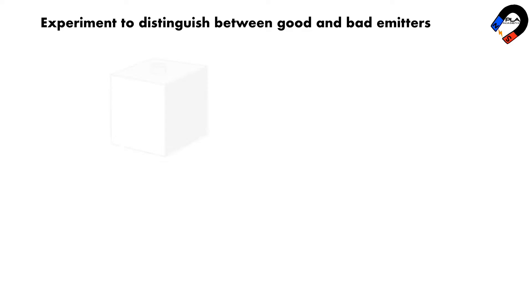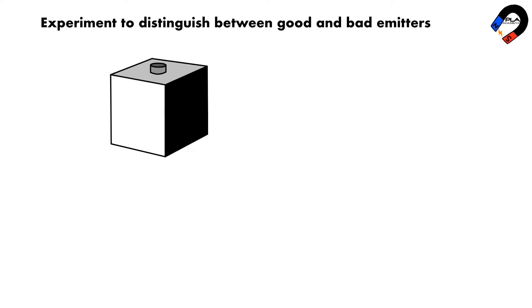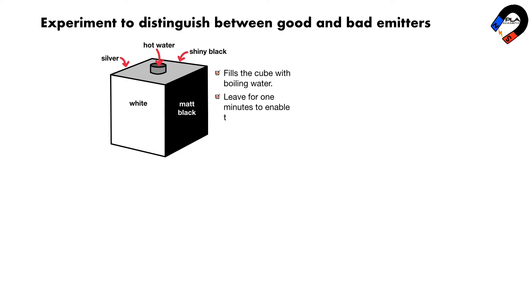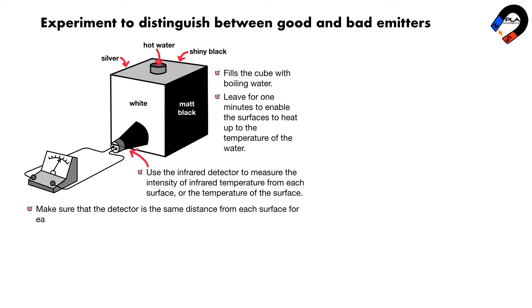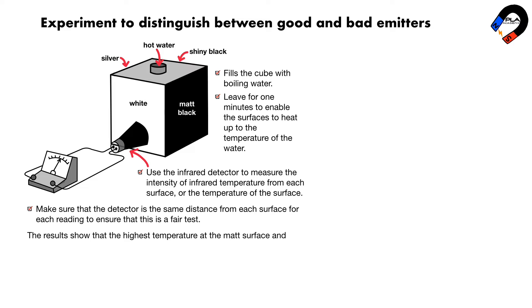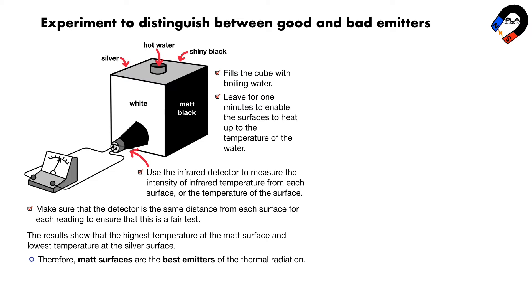An experiment to distinguish between good and bad emitters of infrared radiation: set up the experiment as shown. The metal cube has its vertical sides painted with four different surfaces — matte black, white, shiny black, and silver. Fill the cube with boiling water and leave for one minute to enable the surfaces to heat up. Use the infrared detector to measure the intensity of infrared radiation from each surface, keeping the detector the same distance from each surface to ensure a fair test. The results show the highest temperature at the matte surface and lowest at the silver surface. Therefore, matte surfaces are the best emitters and silver surfaces are the worst emitters of thermal radiation.